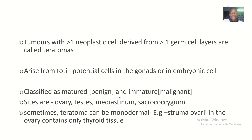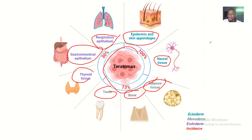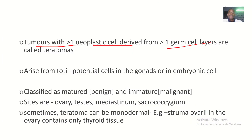Tumors with more than one neoplastic cell derivative, derived from more than one germ cell type, are called teratomas. This is a comprehensive definition: they have more than one neoplastic cell derivative because they are derived from more than one germ cell layer. They may be derived from ectodermal and endodermal origins, or from ectodermal, endodermal, and mesodermal origins, or from ectodermal and mesodermal origins — they are derived from more than one germ layer. They arise from totipotential cells in the gonads or embryonic cells.